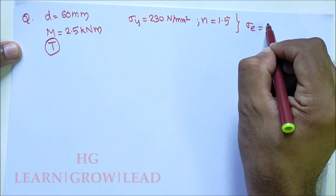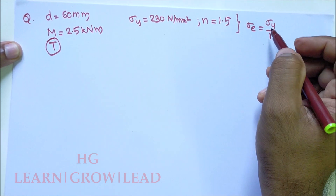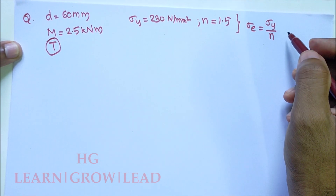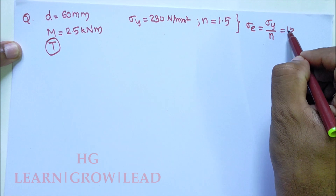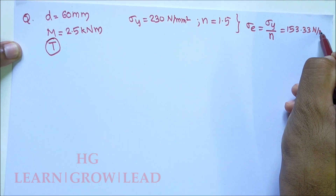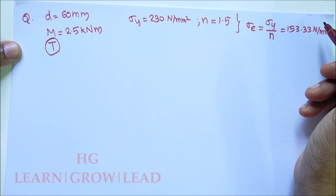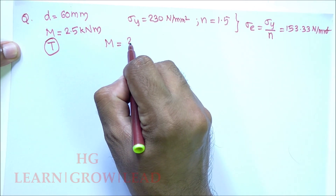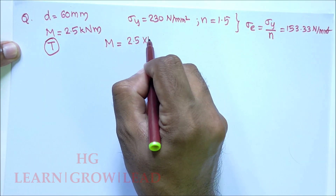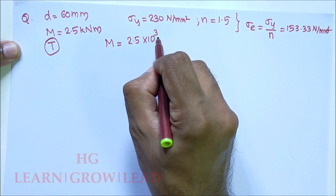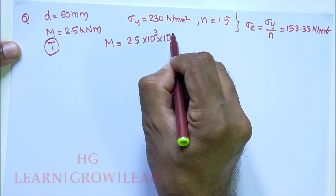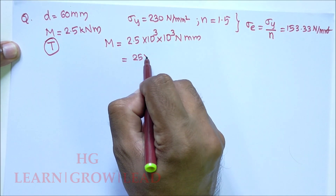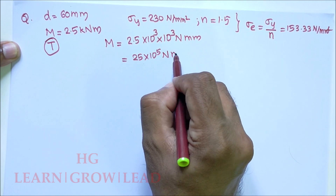The design stress can be calculated as 230 divided by 1.5, which comes to 153.33 N/mm². The bending moment M is equal to 2.5 kNm. Converting kilonewtons to newtons (×10³) and meters to mm (×10³), that gives 25 × 10⁵ N·mm.